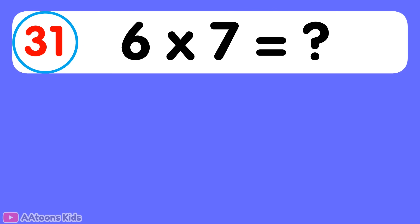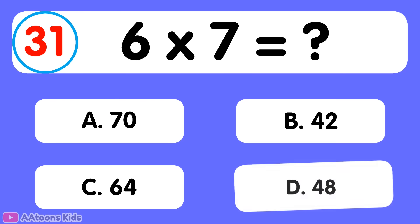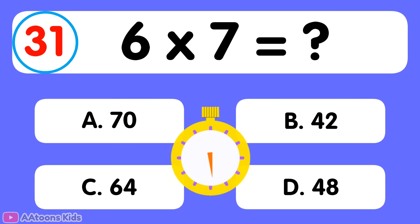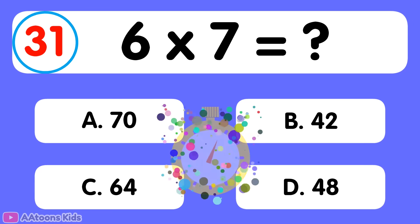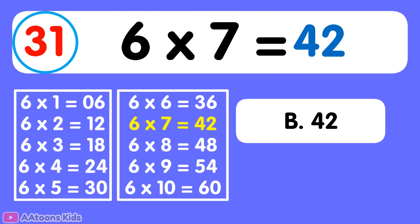6 times 7 is equal to... 42. 6 times 7 is 42.